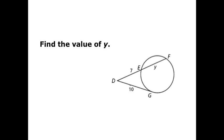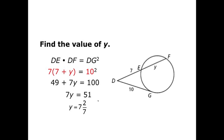And that's going to equal the tangent squared, 10 squared. So 7 times 7 plus y is going to equal 10 squared. That's our setup. So I'll use the distributive property here, 7 times 7 plus y, 49 plus 7y equals my 10 squared or 100. Subtract 49, divide by 7 and I get that y is 7 and 2 sevenths.